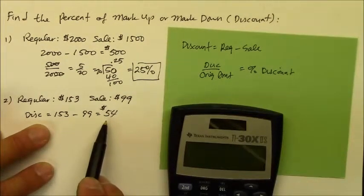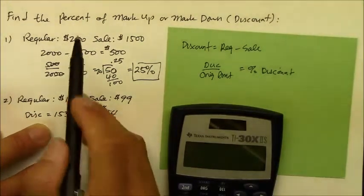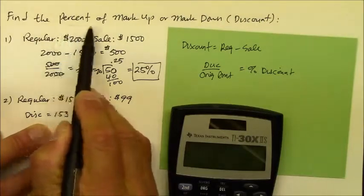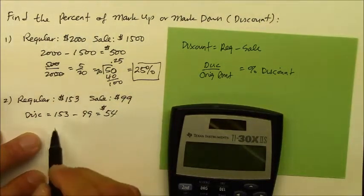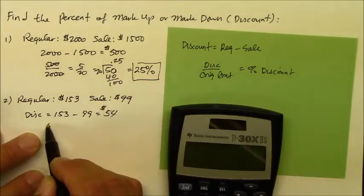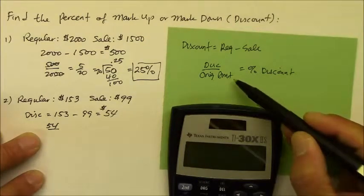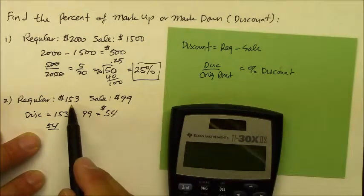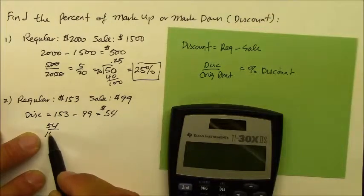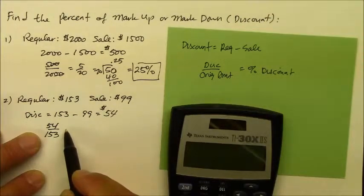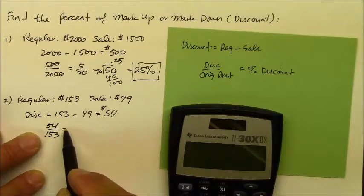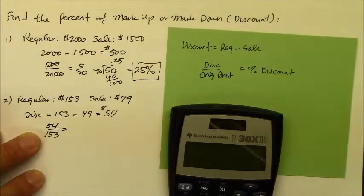Now I have to find the percent of the discount, because the entire concept of this lesson is about percent. Take that discount amount, 54, and divide that by the original amount. In this case, the original or the regular was 153.